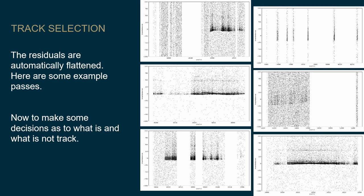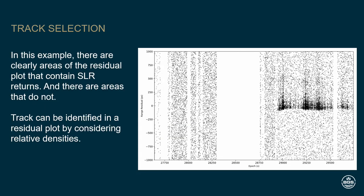At this point you may want to take a closer look at what the data looks like. Here are some example passes. We need to make some decision as to what is satellite track and what isn't. If we take this pass as an example, just by eye you can see there are areas that contain satellite track and areas that don't.